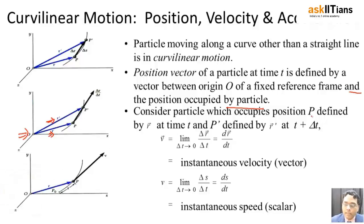The velocity of the particle P can be given by delta r by delta t, which is nothing but in the limit delta t equals to 0, so this is going to be equal to dr by dt, which is nothing but the instantaneous velocity.